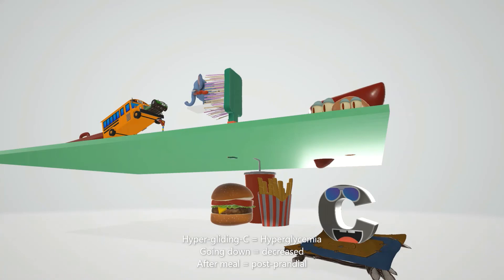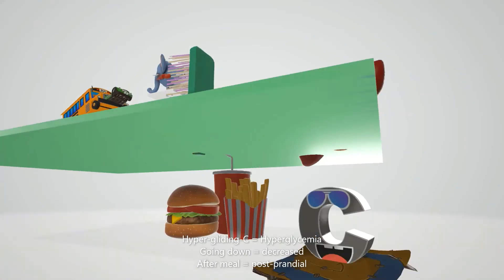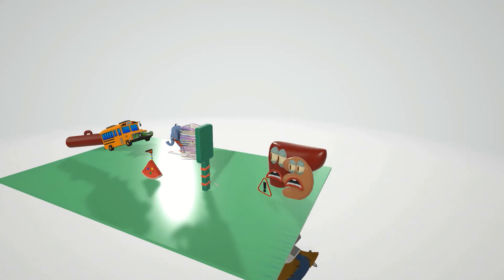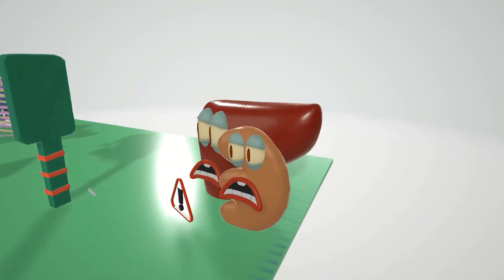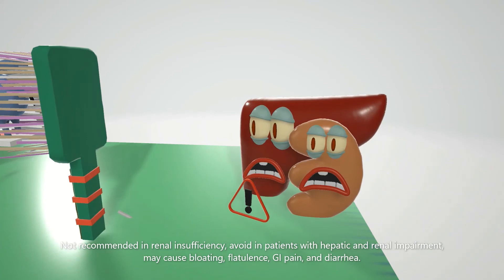Okay, now let's talk about adverse effects, and that's represented by what's going on over here. We notice the liver over here and the kidney with the caution sign. This reminds us that alpha glucosidase inhibitors are not recommended if the kidney function is impaired, represented by the kidney over here and the caution sign. And also these drugs should be avoided in patients with hepatic impairment as there are minor hepatotoxicities associated with these drugs.